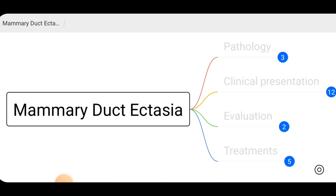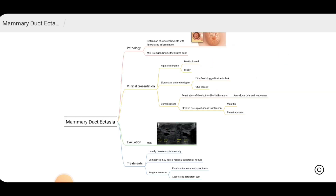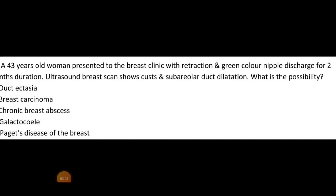Now let's look at how this can be asked in your exam. This is a single best answer question: a 43-year-old woman presented to the breast clinic with nipple retraction and green-colored nipple discharge for two months duration.